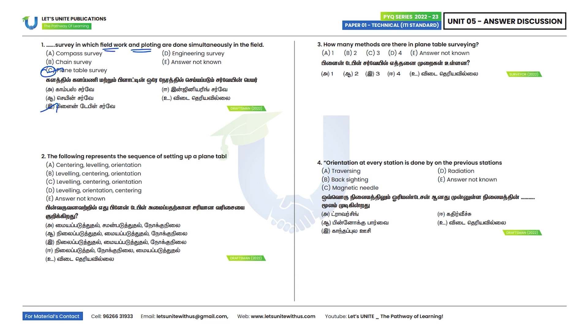Second question: Which of the following represents the correct sequence of setting up the plain table? The sequence for setting up the plain table is: first, leveling; second, centering; third, orientation. Option C is the correct answer.